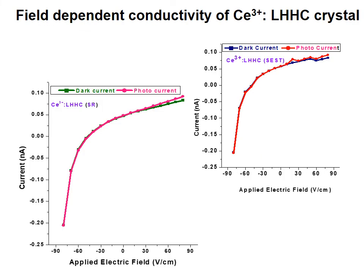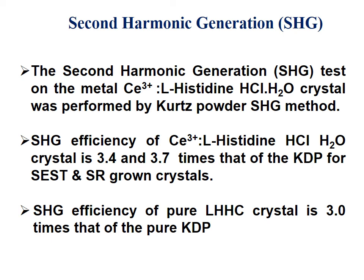Photoconductivity studies: Dark current is slightly lower than photocurrent, confirming that both SEST-grown and SR-grown crystals are positive photoconductive in nature. Second harmonic generation (NLO property): The pure crystal shows 3.0 times the SHG efficiency of KDP. The SEST-grown CE3+-doped LHHC crystal shows 3.4 times, and the SR method CE3+ ion-doped LHHC shows 3.7 times that of KDP — confirming that the dopant enhances the NLO optical property.